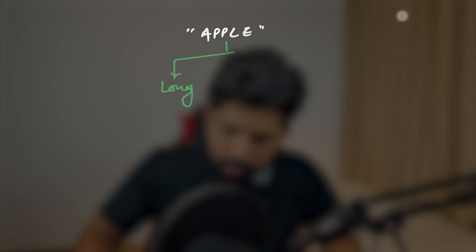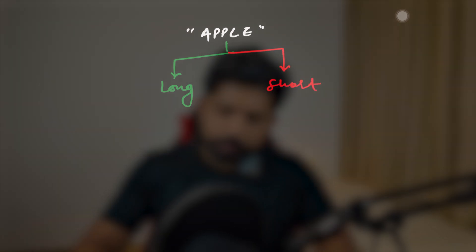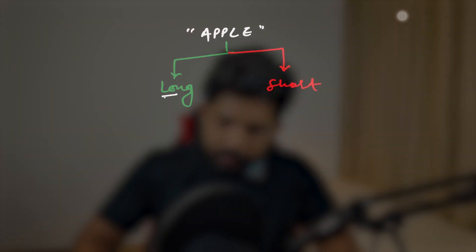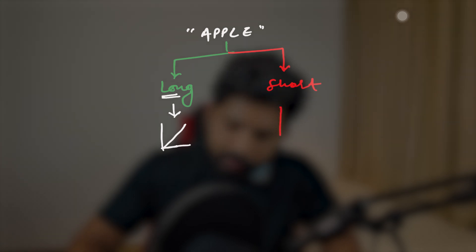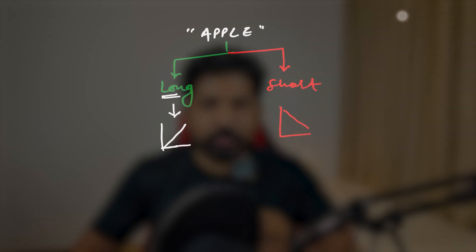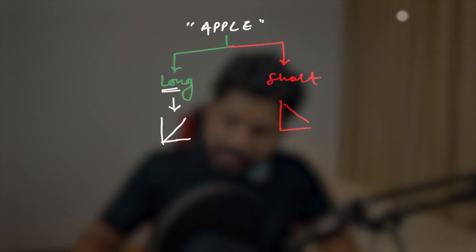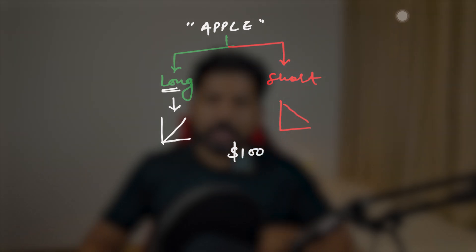Let's say we have a stock — Apple. You have two options: you can either go on a long trade or you can go on a short trade. If you go on a long trade, you benefit if the price of the stock goes up. If you go on a short trade, you benefit when the price of the stock goes down. Let's take an example where the current price of Apple stock is $100 and you go on a long trade.